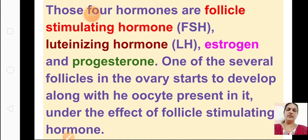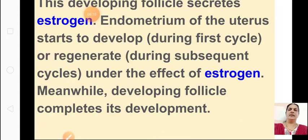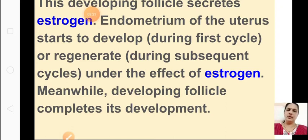The follicle starts developing with the help of follicle stimulating hormone. In one of the ovaries, the follicle will start developing under the effect of FSH. Then the developing follicle secretes estrogen. The developing follicle secretes estrogen, and the endometrium — the wall of the uterus — starts to develop under the effect of estrogen.